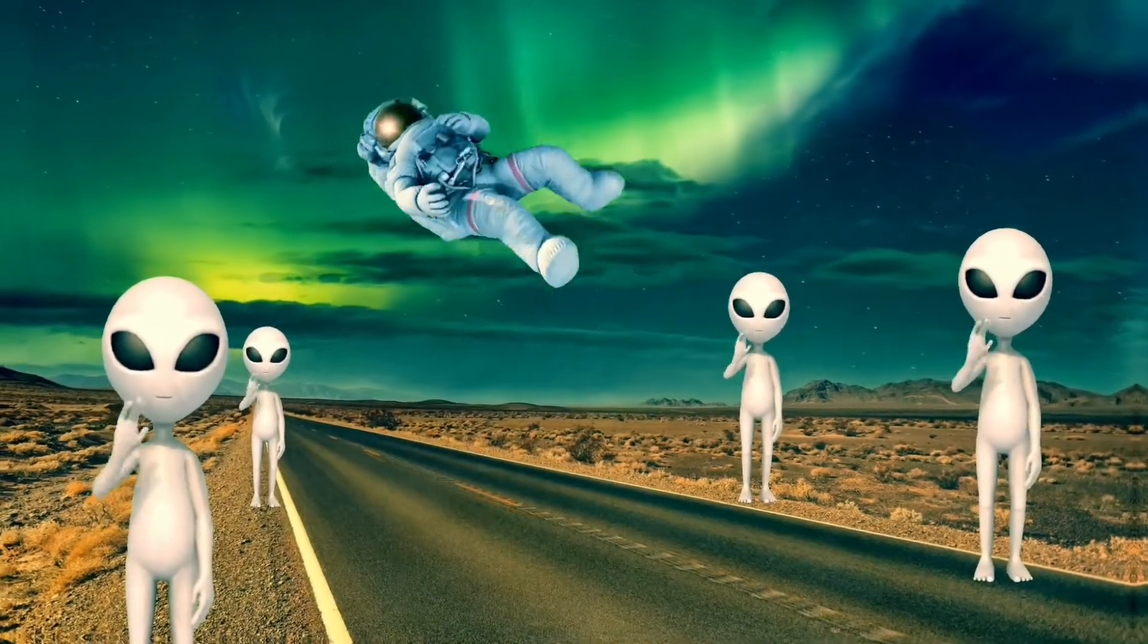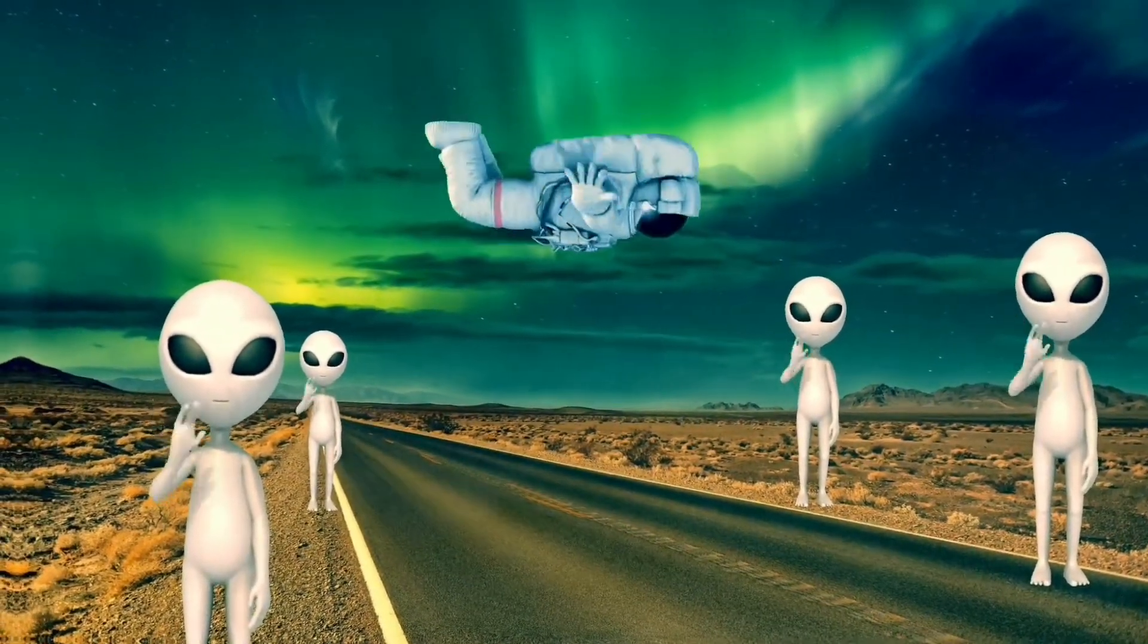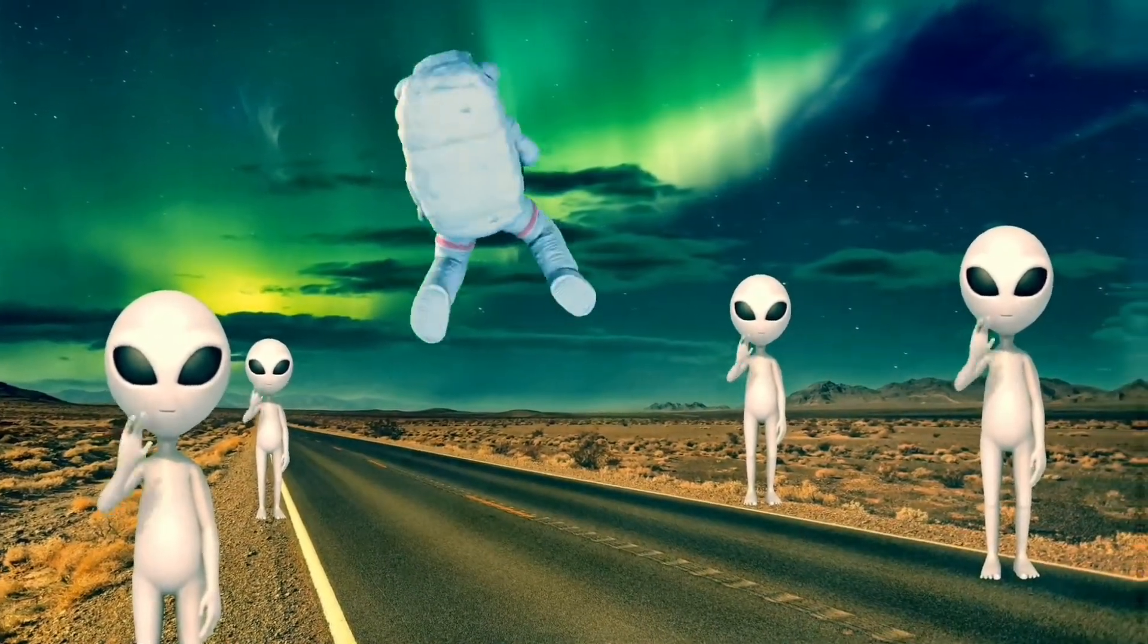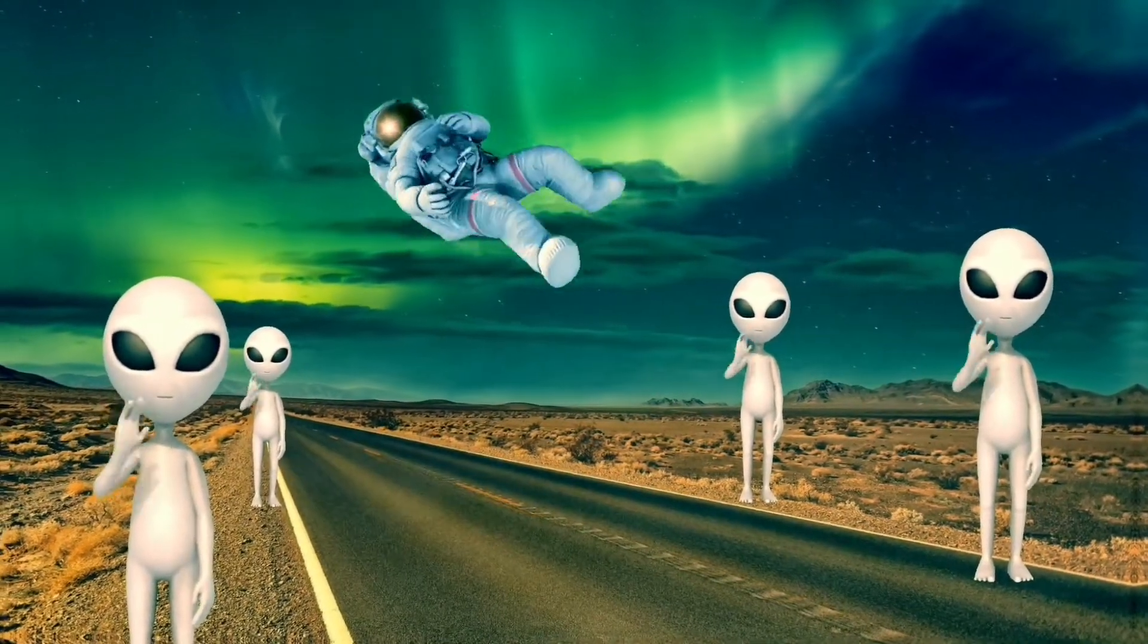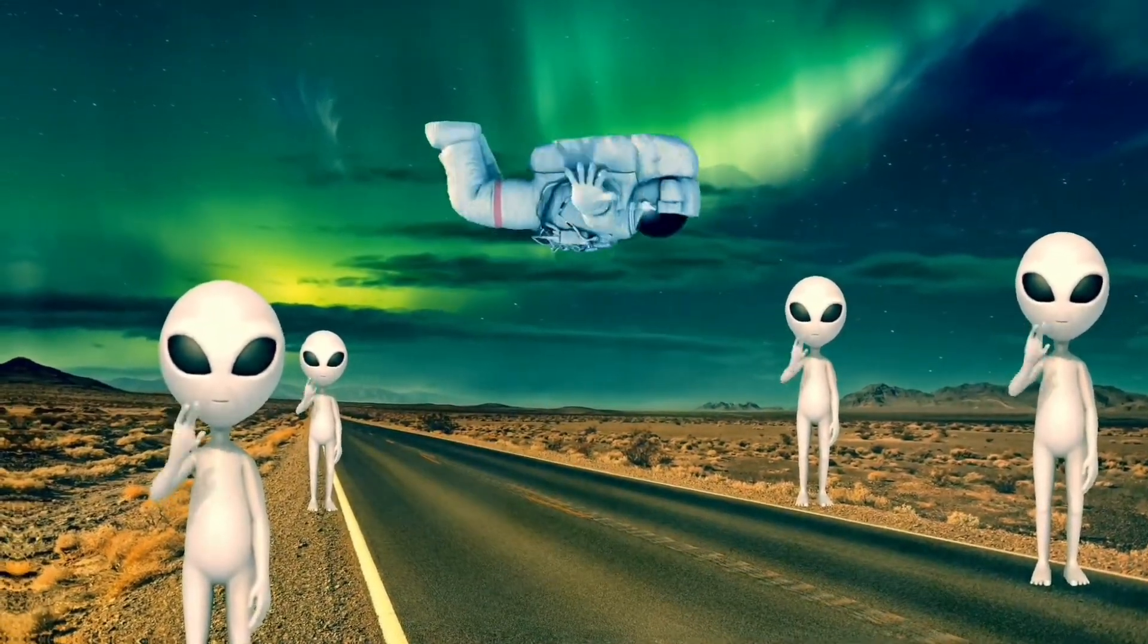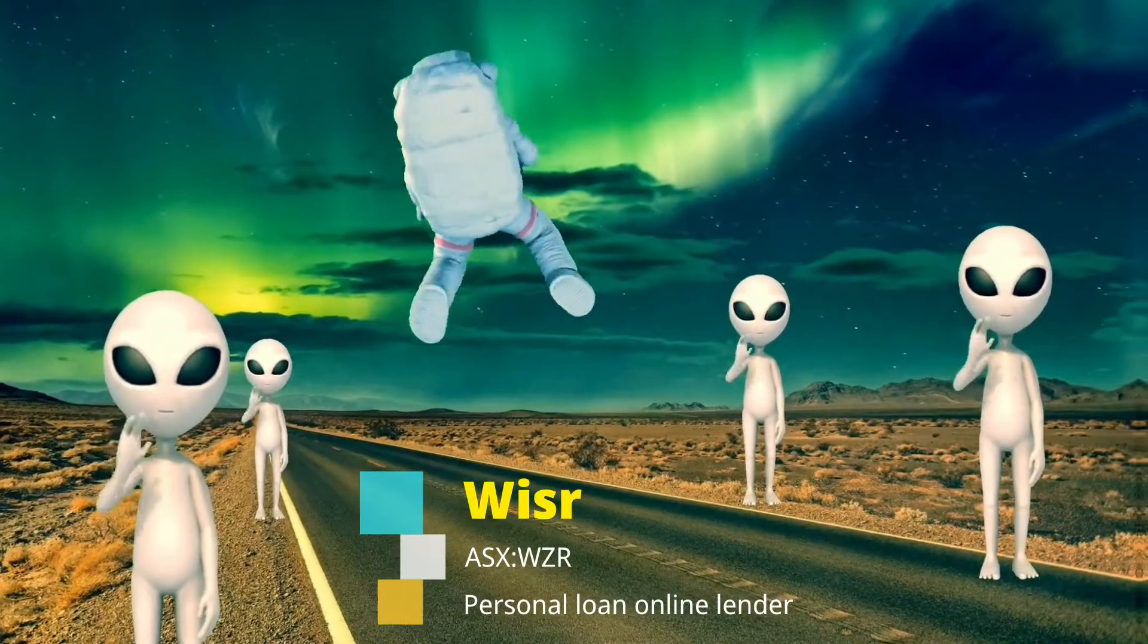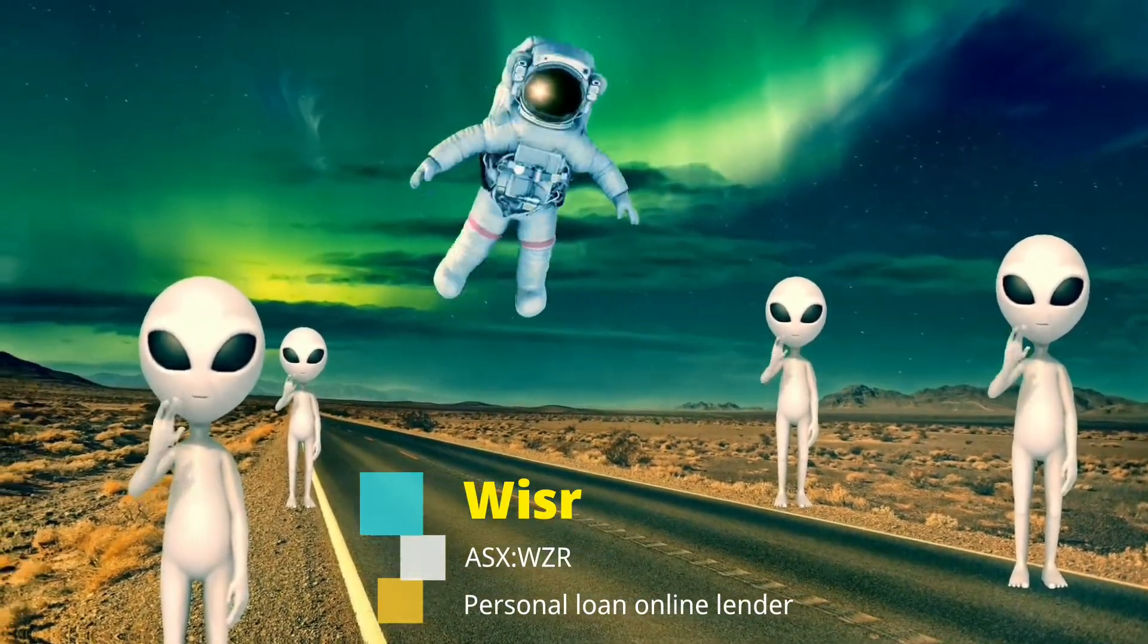So today I will give a shot at finding alpha and becoming a genius myself by analyzing a company called Weiser. The ASX ticker code of this company is WZR.